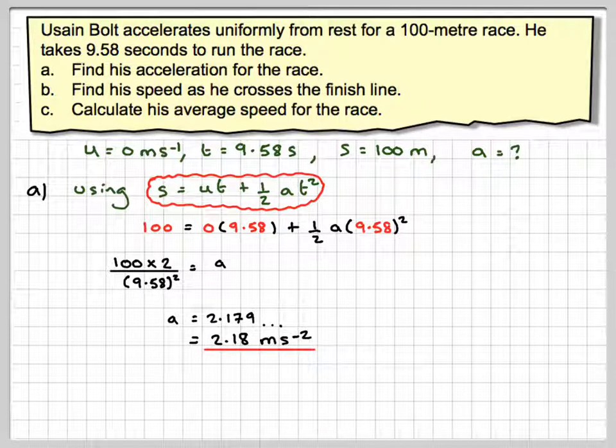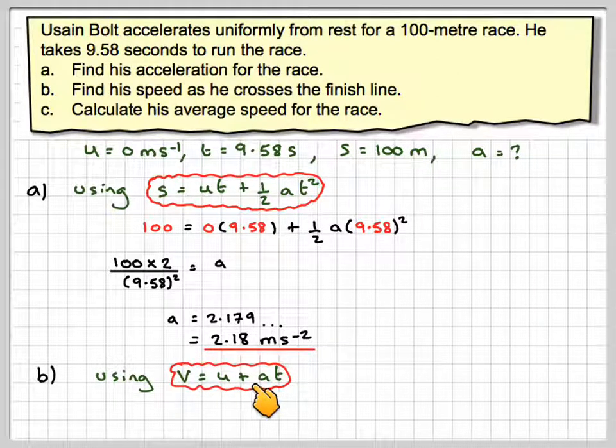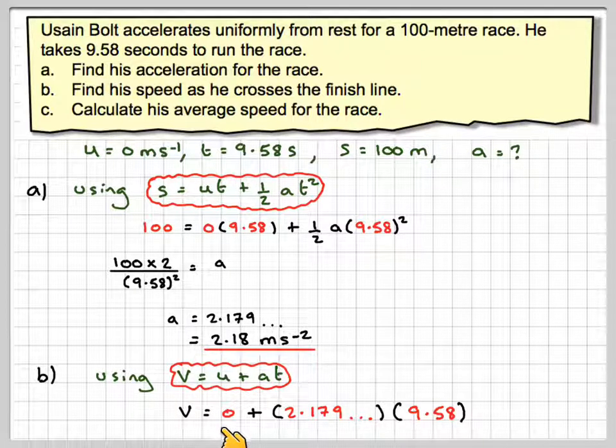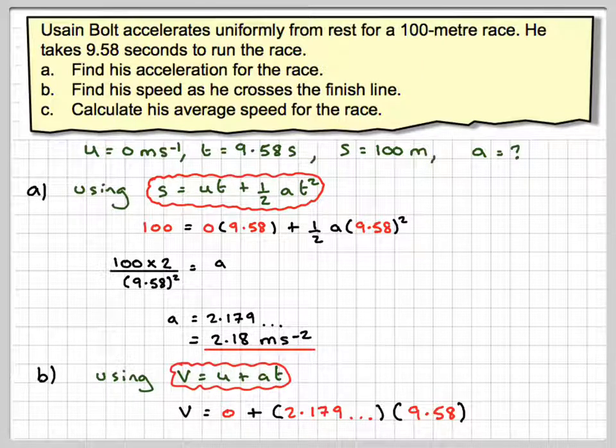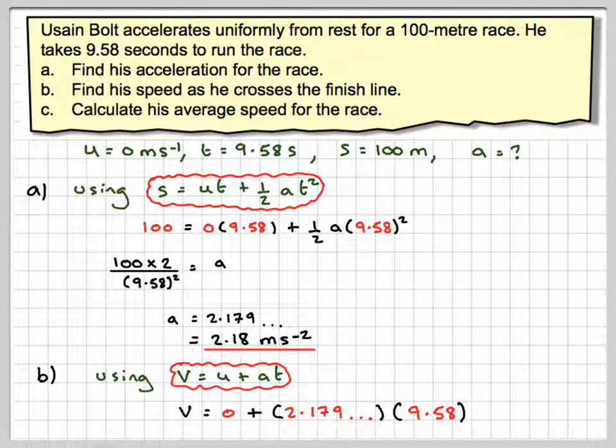For the speed as he crosses the finish line, we use v equals u plus at. We have v equals the initial velocity, which is 0, plus the acceleration. It's important that you don't use something that's already been rounded off. Using the previous answer times the time,